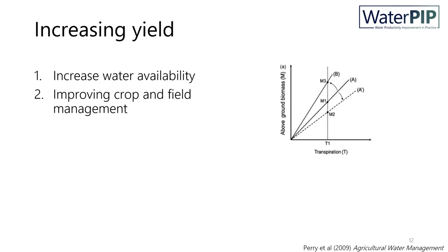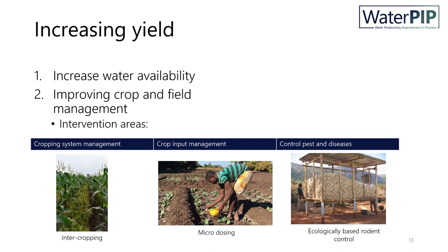A second way to improve yield can be done through improving water productivity, where with similar water consumption, higher yield can be produced. As mentioned, theoretically the water productivity slope is a linear one under similar nutrient and climate conditions. While climate conditions are out of the scope of our interventions, there are ways to increase the water productivity slope by influencing the nutrient component or the crop component. Typical intervention areas focus on crop system management from improving seeds to intercropping systems, improving inputs such as nutrient conditions, as well as controlling pests and diseases that affect crop production or may cause complete crop failure.